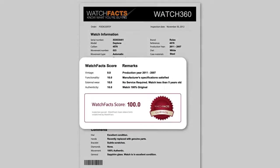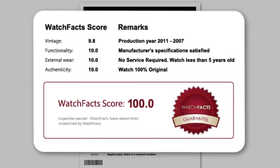The WatchVaxx score is an instant comparison tool that allows you to quickly and easily understand the overall condition of a watch. The key factors of assessment are age, functionality, external wear, and authenticity.